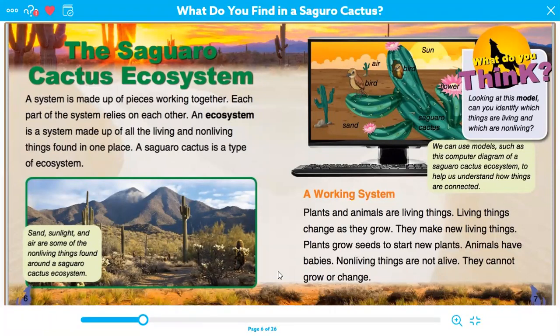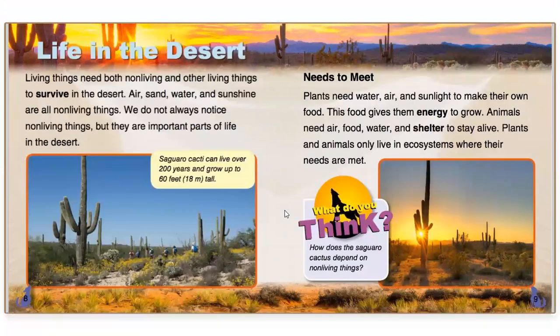A working system. Plants and animals are living things. Living things change as they grow; they make new living things. Plants grow seeds to start new plants, and animals have babies. Nonliving things are not alive — they cannot grow or change. Living things need both nonliving and other living things to survive in the desert. Air, sand, water, and sunshine are all nonliving things. We do not always notice nonliving things, but they are important parts of life in the desert.